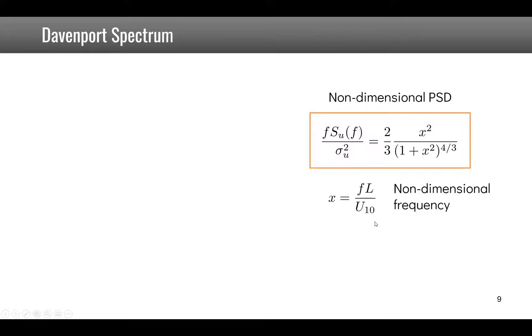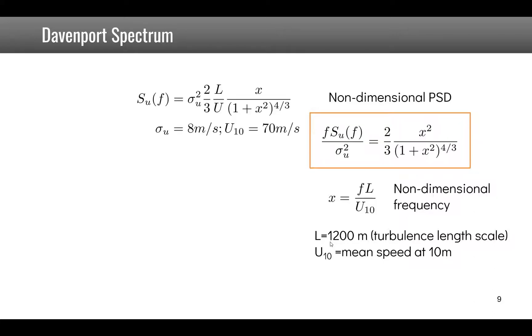What are these wind spectra? One of them is given by the Davenport spectrum. The Davenport spectrum is defined by its power spectral density Su(f), which is given in a non-dimensional form. x is the non-dimensional frequency, it's f times L over U10, where L is the turbulence length scale equal to 1200 meters, and U10 is the mean speed at 10 meters. If we rewrite the equation to write Su(f) and replace f by x times U over L, we get this expression of Su(f).